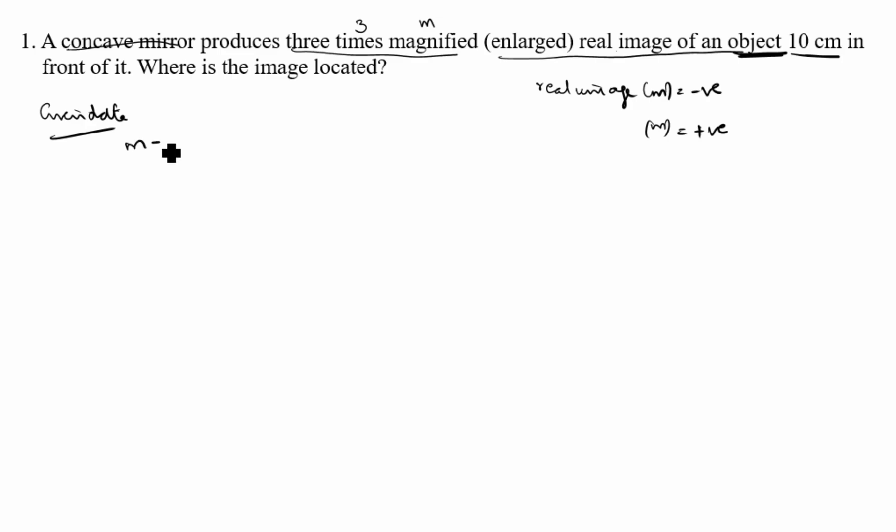m equals minus 3. Real image is given, so always negative m value. So you will write minus 3 here. After that, the object distance u is 10 centimeters. What comes, minus or plus? Always u is negative for mirror and lens. Don't confuse - always u is negative.